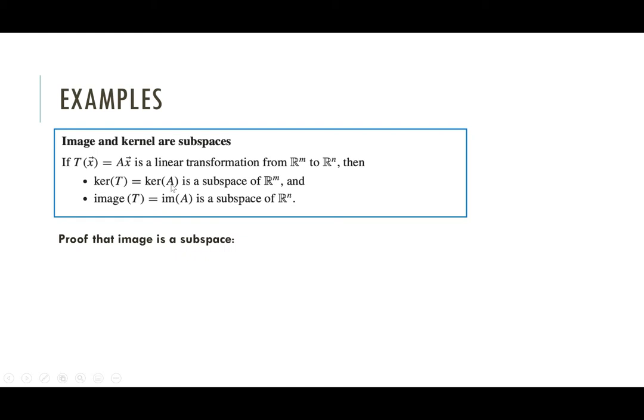But if we're going to prove it's a subspace, first thing we got to do is check, is zero in the image? Well, you just think about where any linear transformation would take the zero vector. Linear transformation is just multiplication by a matrix, and any matrix multiplied by the zero vector gives you the zero vector. So yes, the zero vector is going to be in the image of any linear transformation.